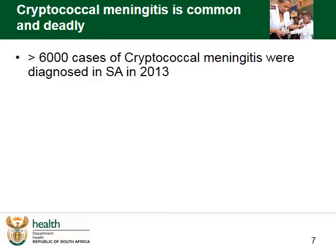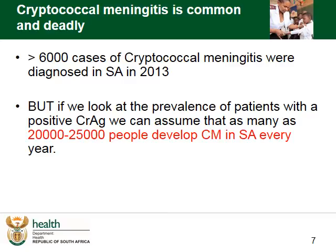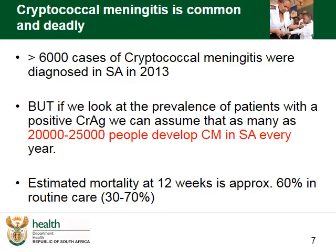In 2013, 6,000 cases of cryptococcal meningitis were diagnosed through NHLS data looking at lumbar punctures. But if we look at the prevalence of patients with a positive CRAG, we can assume that as many as 20,000 to 25,000 people develop cryptococcal meningitis in South Africa every year. The estimated mortality at 12 weeks is approximately 60% in routine care. It is therefore essential that we detect cryptococcus early in patients with low CD4 counts and manage them appropriately to prevent cryptococcal disseminated disease.